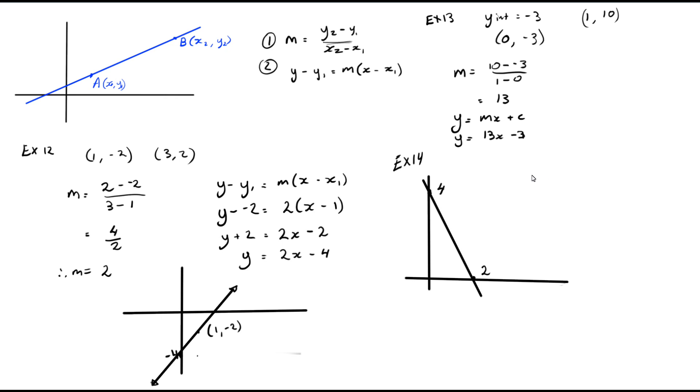So essentially what we've got is the coordinates (0, 4) and (2, 0). So to work out the gradient, we can say 0 take 4 divided by 2 take 0, which is minus 4 divided by 2. So we get minus 2.